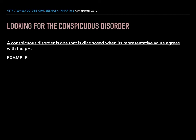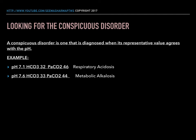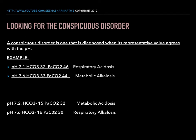Let me give you some examples. First: pH 7.1, bicarb 32, pCO2 46 — the pressure of carbon dioxide agrees with the acidic pH, so it's a respiratory acidosis. Second: pH 7.6 and the bicarb value agrees with it, so it's a metabolic alkalosis. Third: pH 7.2 agrees with the bicarb, so it's a metabolic acidosis. Fourth: pH 7.6 agrees with the pressure of carbon dioxide, so it's a respiratory alkalosis.